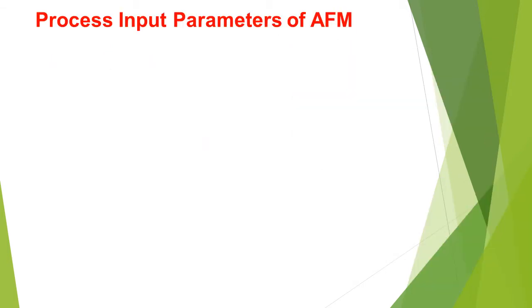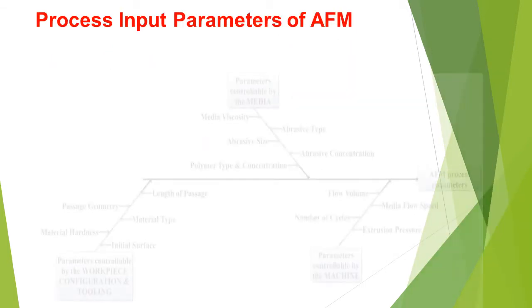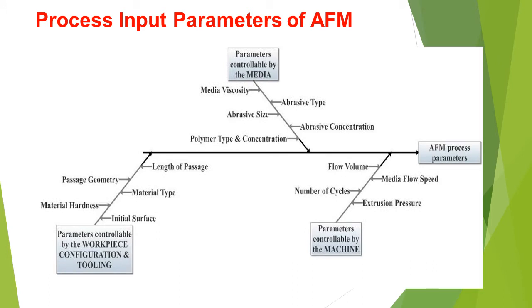Process input parameters of AFM. From this particular diagram, we can understand the parameters controlled by the workpiece — this configuration and tooling consists of: material hardness, initial surface, material type, passage, geometry, and length of passage.